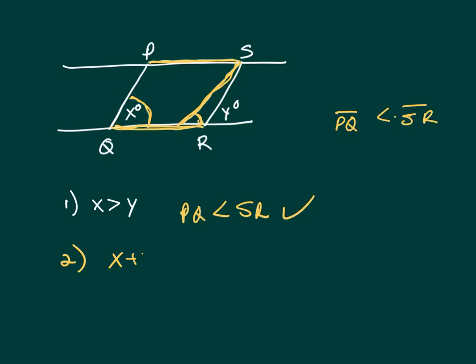Clue two, X plus Y is greater than 90, and that doesn't tell us anything because we don't know which is it, we don't know how big X is or how big Y is. So the answer is A.